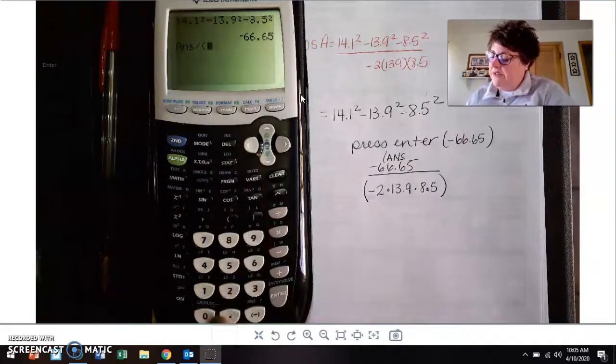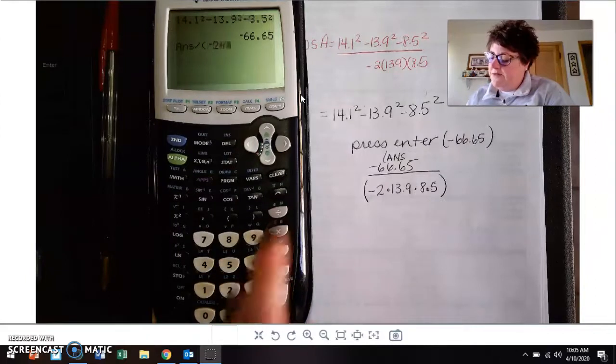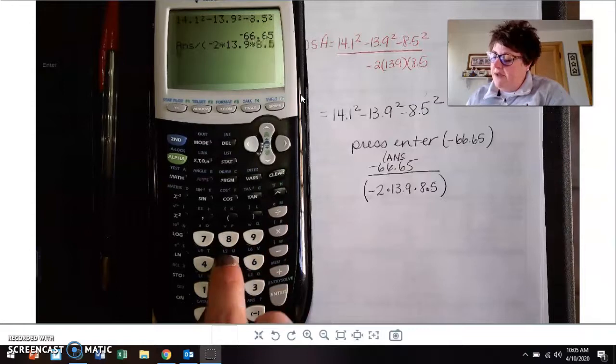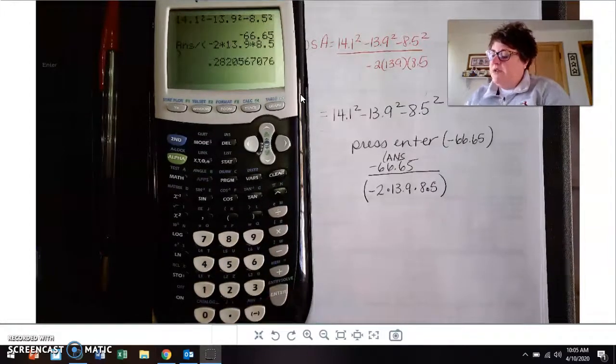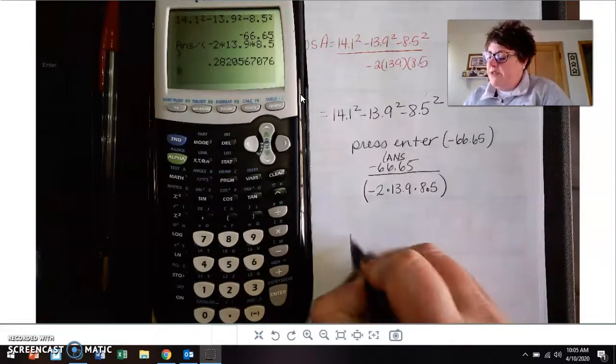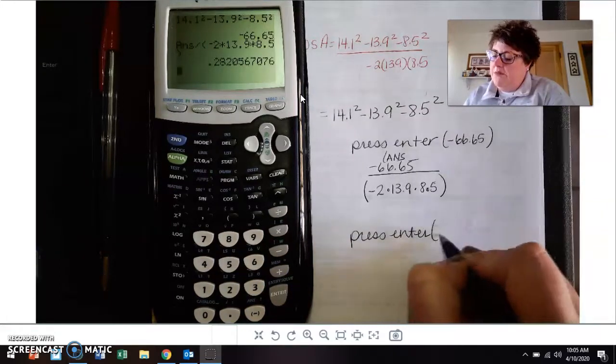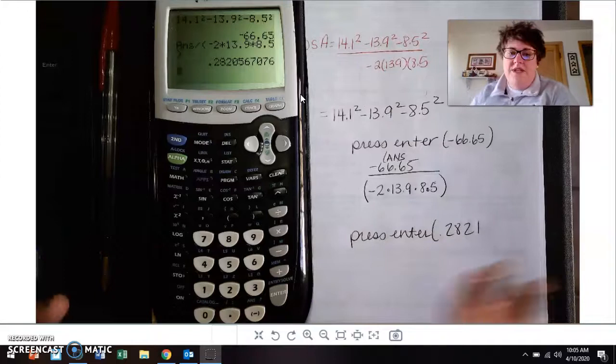So divide, open up a set of parentheses, negative 2 times 13.9 times 8.5, and then close parentheses. At that point, press enter, and you should get 0.2821, something like that.